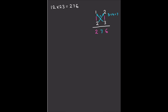Let's do 33×11 the same way. Write 33 on top and 11 below. Multiply vertically: 3×1 = 3 on the right, and 3×1 = 3 on the left, leaving a gap in the middle. Now multiply diagonally: 1×3 = 3 and 1×3 = 3. Add them: 3+3 = 6. Put the 6 in the middle. The answer is 363.